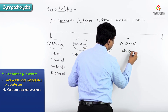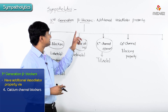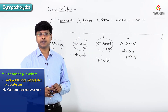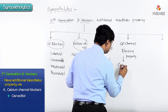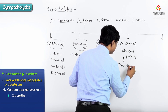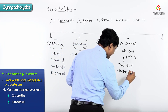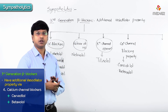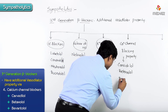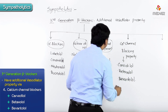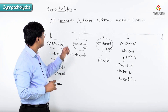Apart from that, we have third generation beta blockers with calcium channel blocking property. The examples here are carvedilol, betaxolol, and bevantolol. These are the third generation beta blockers with calcium channel blocking property.